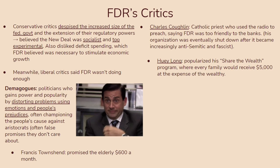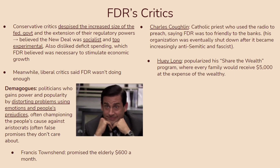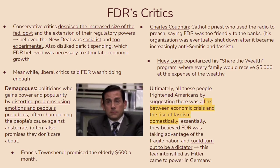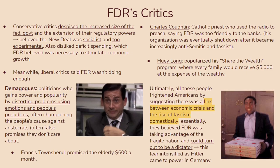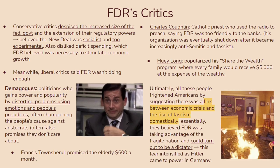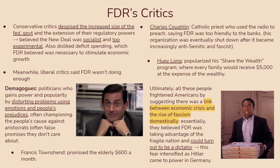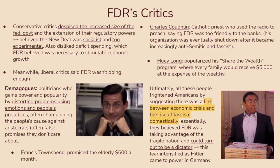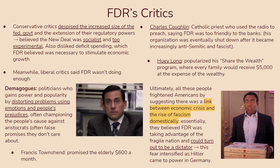You should also know about Huey Long, who popularized his Share the Wealth program where every family would receive $5,000 at the expense of the wealthy — so taxes paid by the wealthy would go directly towards the poor. Obviously this wasn't really possible at the time, but your key takeaway should be that all of these people frightened Americans by suggesting a link between economic crisis and the rise of fascism domestically. They believed that FDR was taking advantage of the fragile nation so that he could eventually rise to power and become dictator — a fear that intensified when Hitler came to power in Germany.